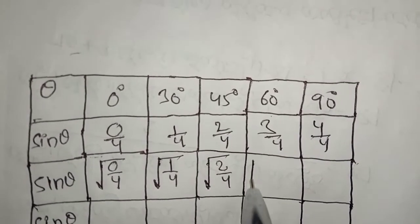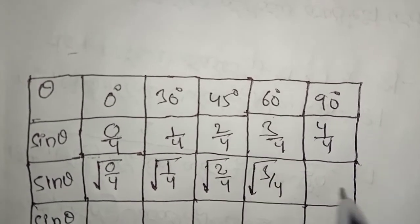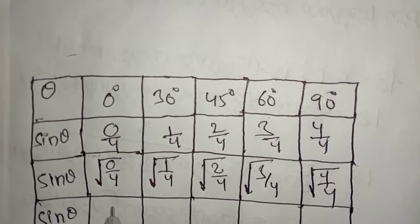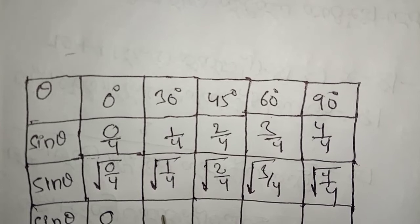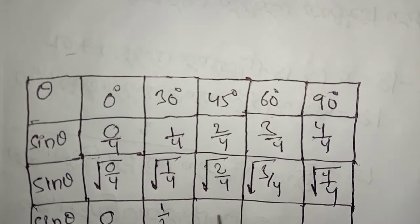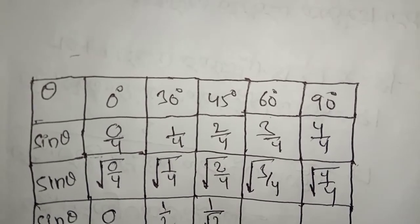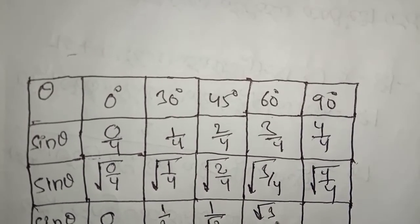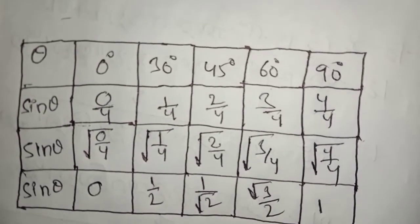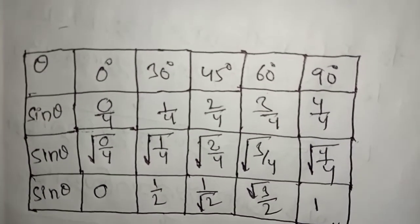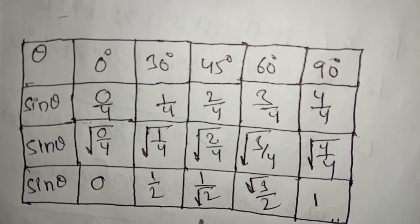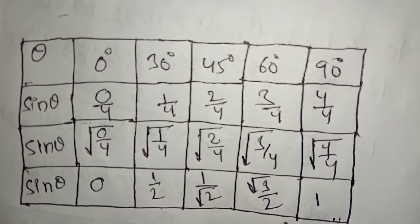2 by 4 and 3 by 4 and 4 by 4. So 0 by 4 is 0, 1 by 4 simplifies to 1 by 2, 2 by 4 simplifies to 1 by root 2, 3 by 4 gives root 3 by 2, and 4 by 4 is 1. These are the sin theta values.